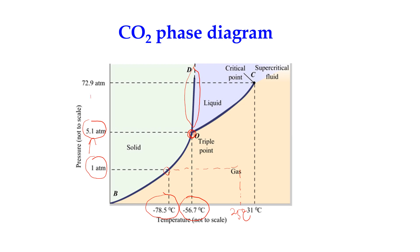When we increase the pressure up to the critical pressure, we reach the critical point at the critical temperature. Increasing the temperature beyond the critical temperature gives us the supercritical fluid. Comparing the three phases, solid CO2 has a higher density than liquid or gas when pressure is increased. For the water phase diagram, liquid water has the highest density among the three phases.